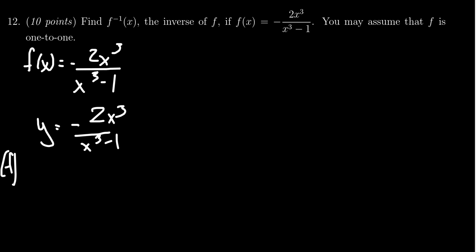Now to switch to the inverse function f inverse, we're going to swap the roles of x and y. So this y is going to become an x and these x's are going to become y. So we get x equals negative 2y cubed over y cubed minus 1.